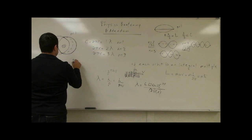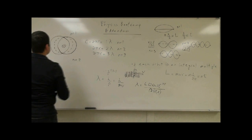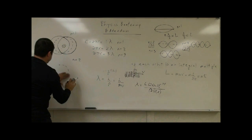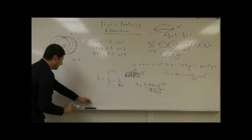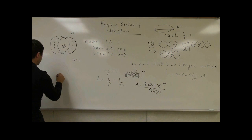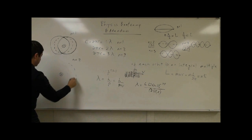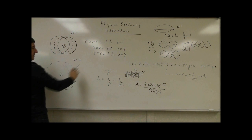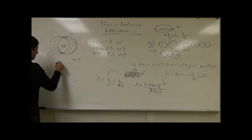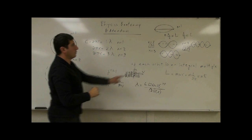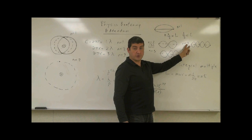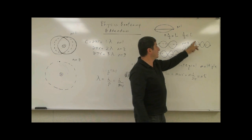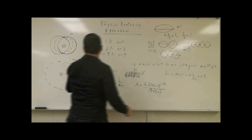For n equals 2, you have a bigger circumference farther out from the nucleus. You need to fit two complete wavelengths into this circumference, going up, down, up, down around the orbit.